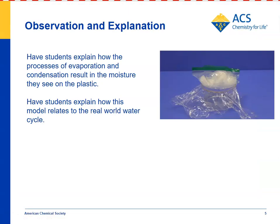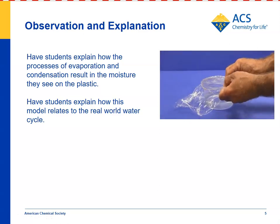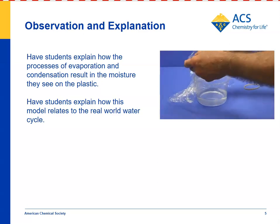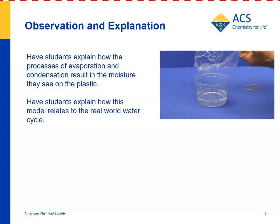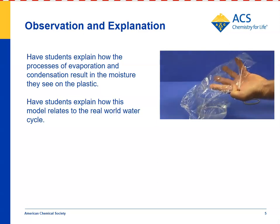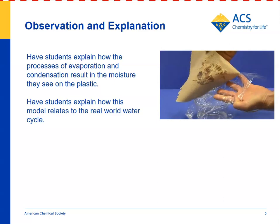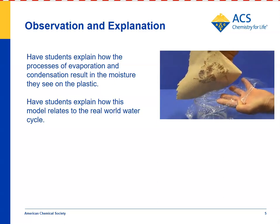After looking at the illustrations and animations, you can have students go back to their model and remove the ice from the top, and take a look at the inside of the plastic wrap. Kids will notice that it looks wet, and then they can use a brown paper towel to be absolutely sure that there's moisture on the inside. The question is: where did it come from?